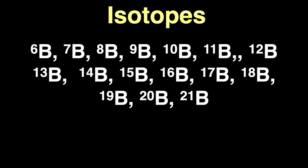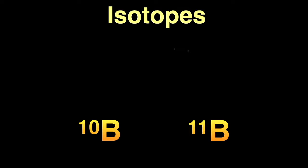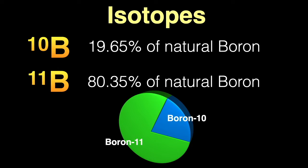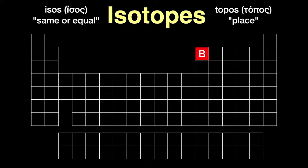The number you see next to the chemical symbol is the total number of protons and neutrons in the nucleus. There are 16 known isotopes of boron, and of those 16, there are only two stable non-radioactive isotopes: boron-10 and boron-11. There's far more boron-11 than boron-10 in the universe. By the way, the word isotope comes from the Greek isos, meaning same or equal, and topos, meaning place, since all these various forms of boron occupy the same place in the periodic table.